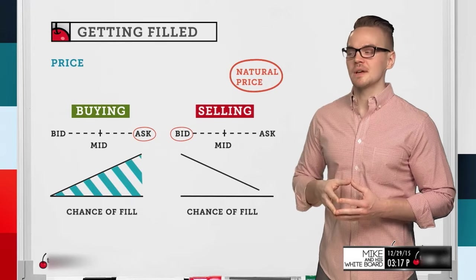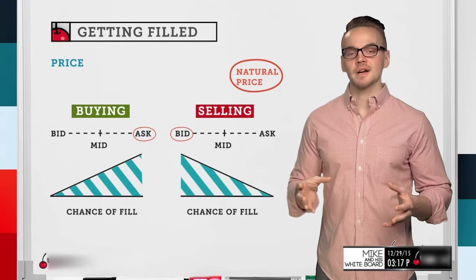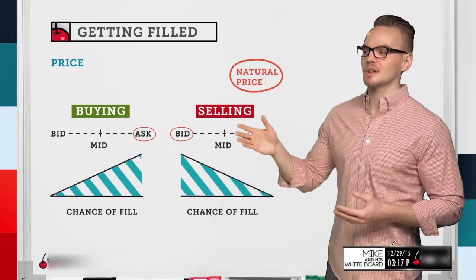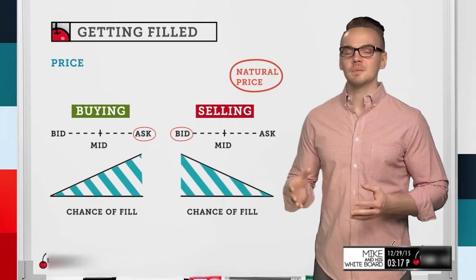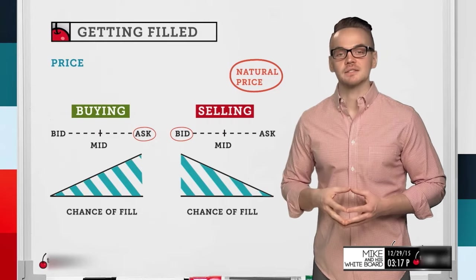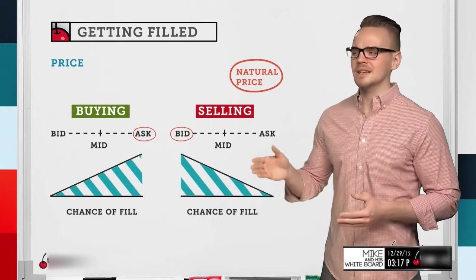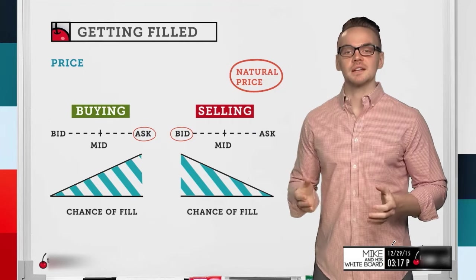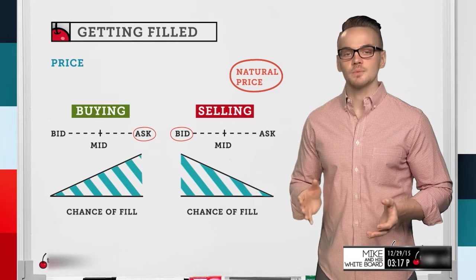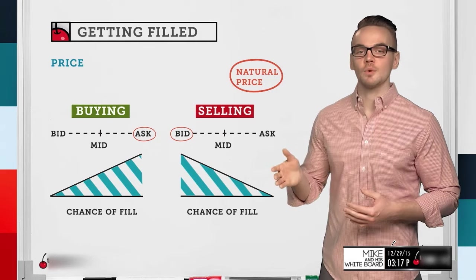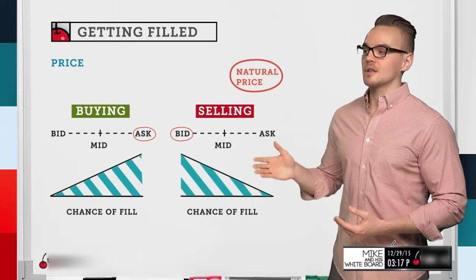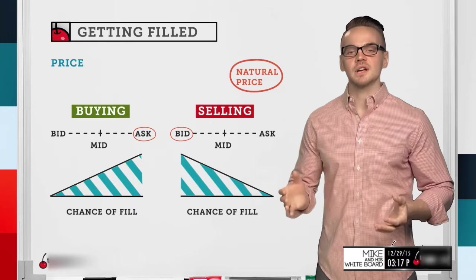Inversely, if I'm looking at selling options, the bid is the natural price, and I'm going to have a higher chance of getting filled the closer I get to the bid price. For example, let's say I'm selling an option where the mid price is 50 cents, the bid price is 45 cents, and the ask is 55 cents — a 10-cent wide bid-ask spread. If I try routing it at the mid price of 50 cents and it doesn't go through, the closer I get to the bid of 45 cents the higher my chance of getting filled, though it does mean a lower profit overall.